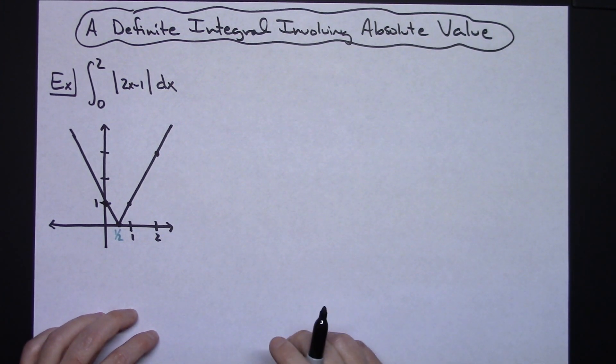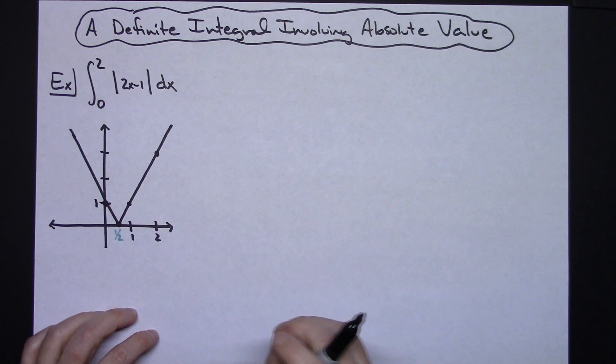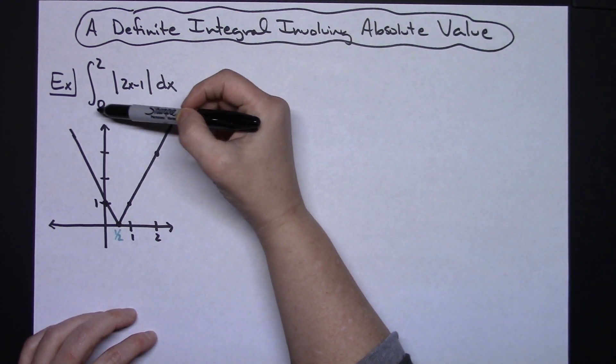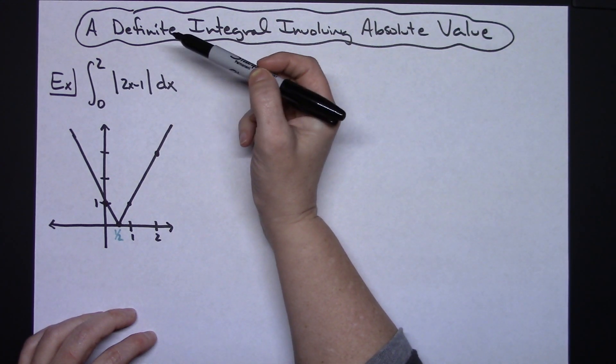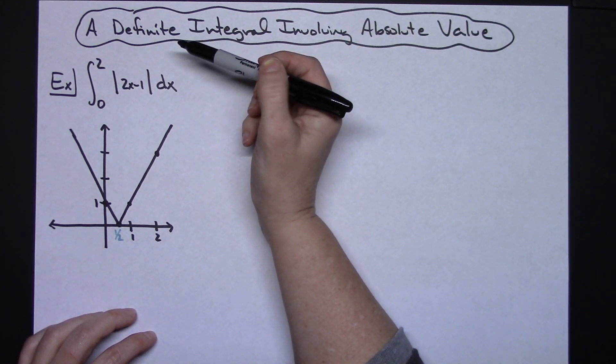In this video I'm going to take a look at one definite integral that involves an absolute value bar. So I chose the integral from 0 to 2 of absolute value of 2x minus 1 dx.